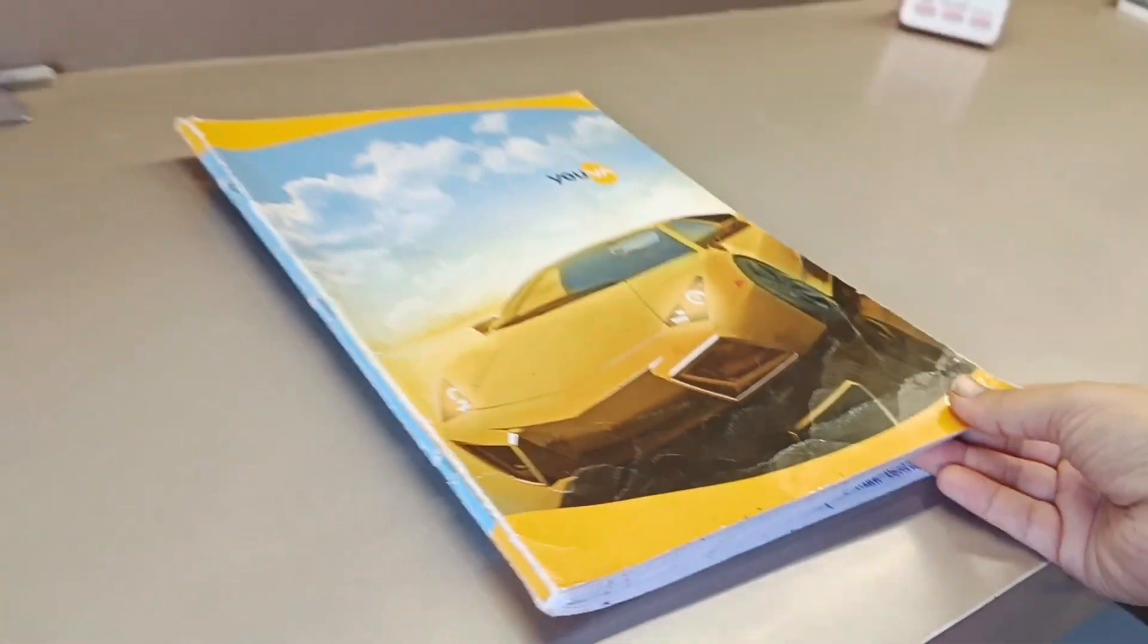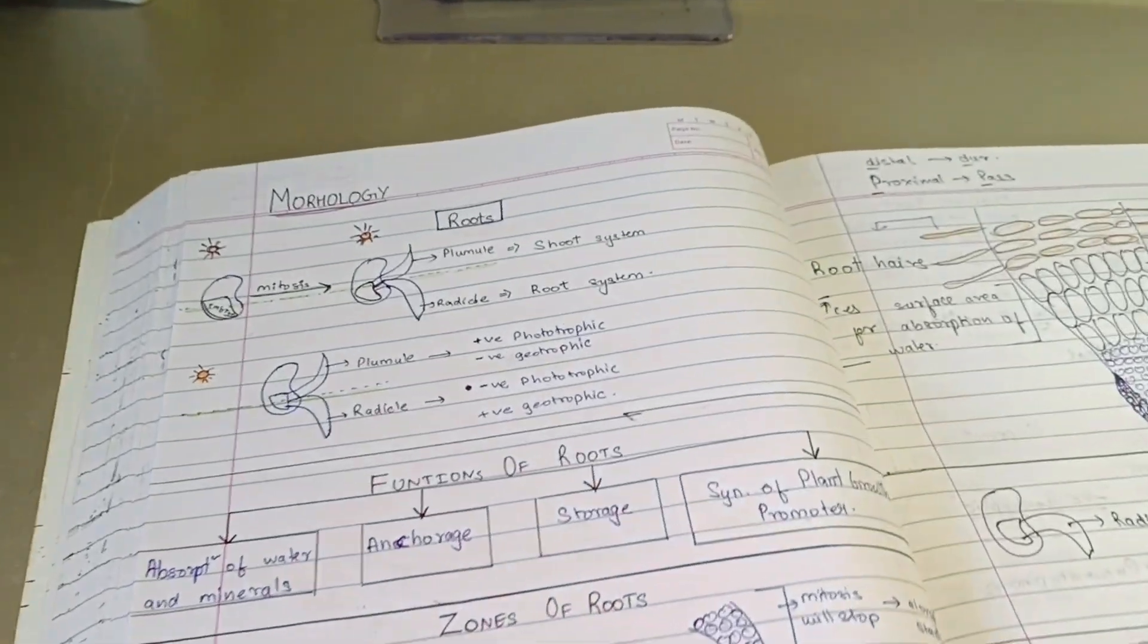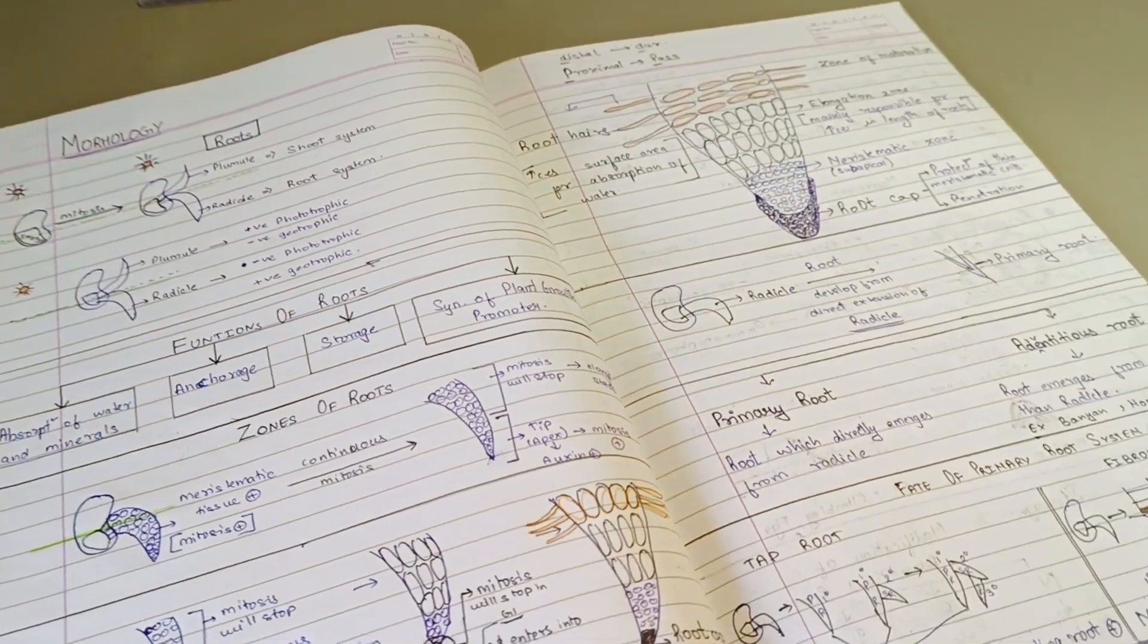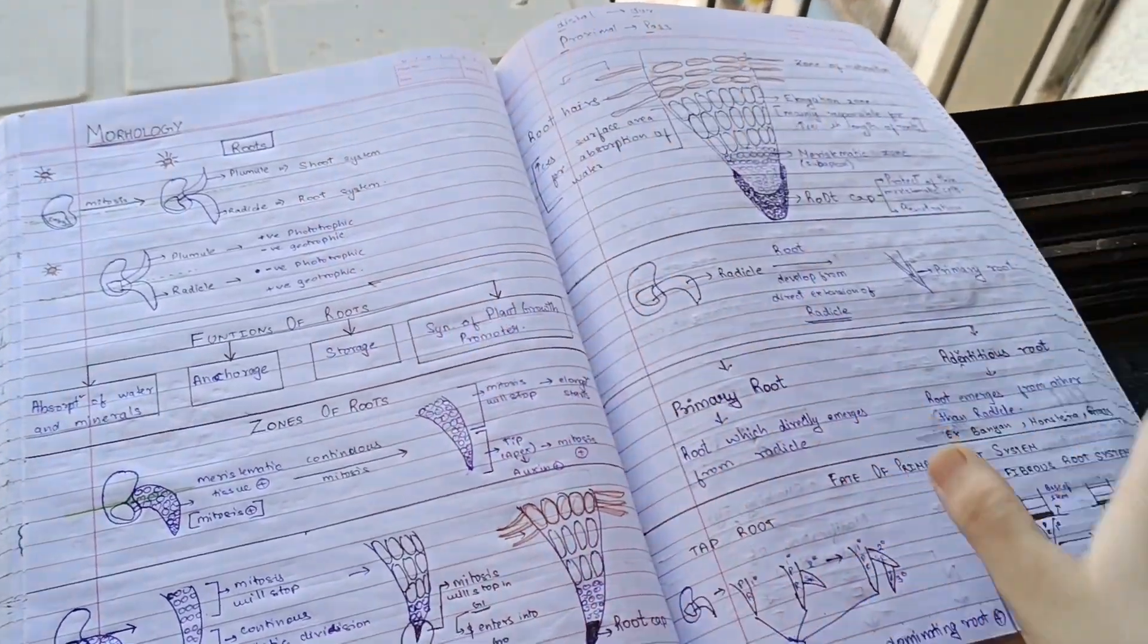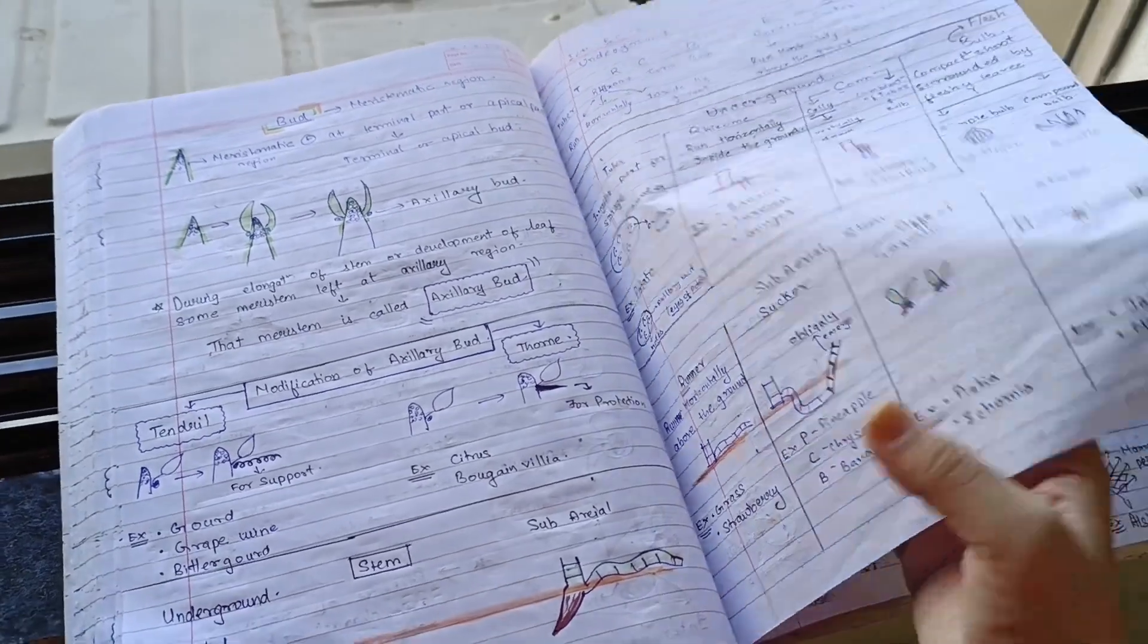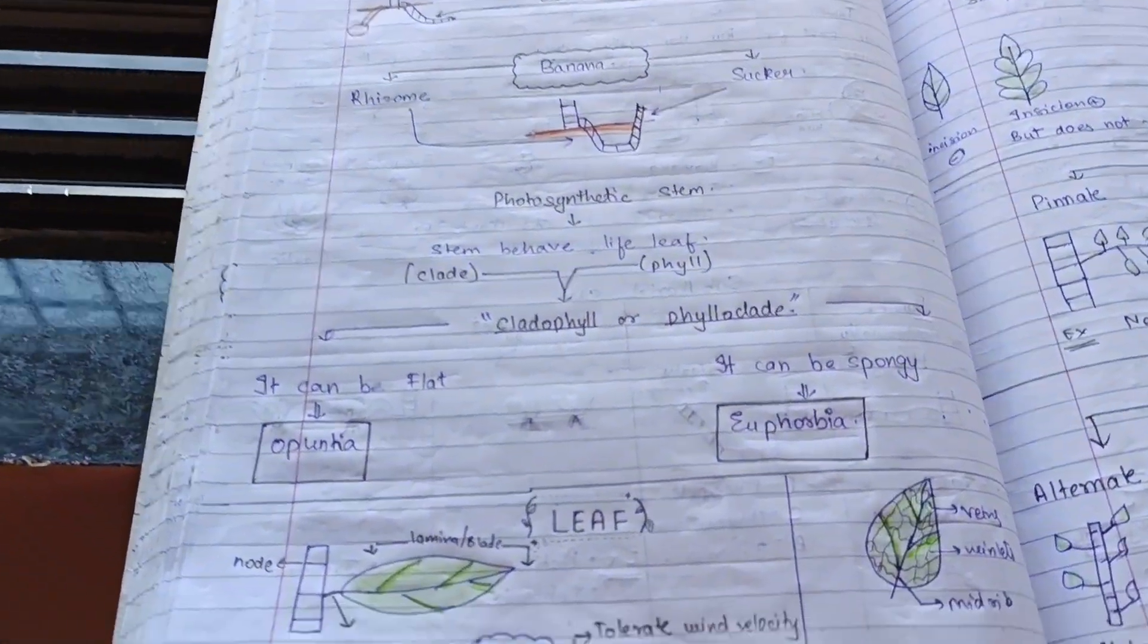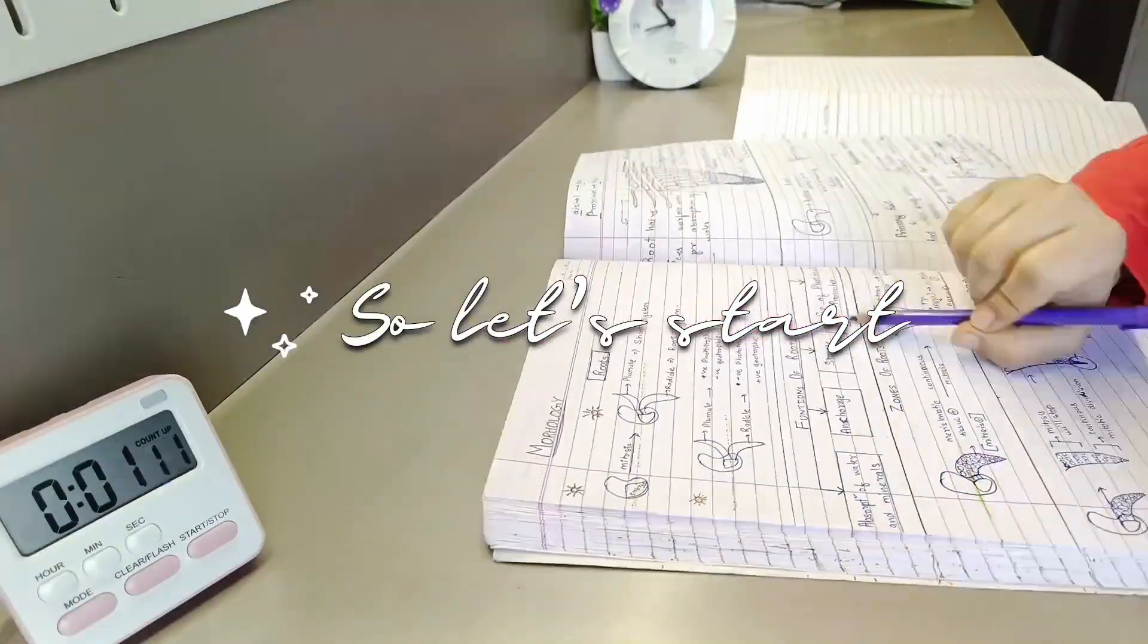In botany, there is plant kingdom, biological classification, and morphology. These chapters are considered among the most difficult chapters of botany, but if we study these chapters in small portions, it will be easier for us to tackle them. I'm going to study about the roots and the stem from the notes as well as from the NCERT.